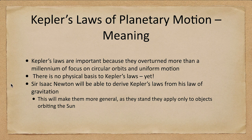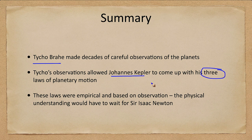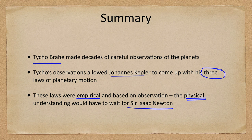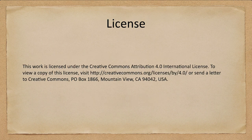So let's finish up with our summary. We looked at Tycho Brahe and his decades of careful observations, which allowed Kepler to come up with three laws of planetary motion explaining how planets orbit in the solar system. Note that they were empirical, based on observation; the physical understanding of why they were the case would have to wait for Sir Isaac Newton, whom we will discuss in an upcoming lecture. That concludes this lecture on the explanation of planetary motion — we'll be back next time for another topic in astronomy. Have a great day everyone and I will see you in class.